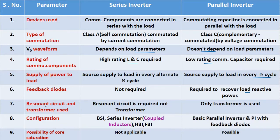Seventh one is use of resonant circuit and transformer. In the series inverter, as we have seen, an LC resonant circuit is required but the transformer is not required. Whereas in the parallel inverter, a center tap transformer is required but the resonant circuit is not required.